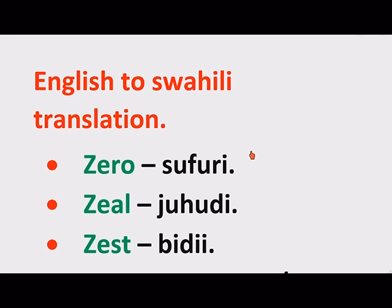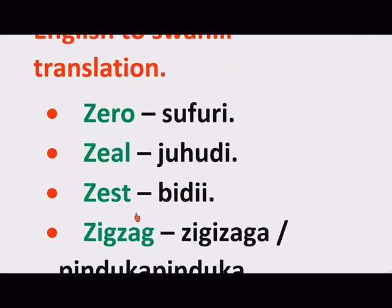There are just a few, but let's get started. Zero — Sufuri. Zeal — Juhudi. Zest — Bidi.